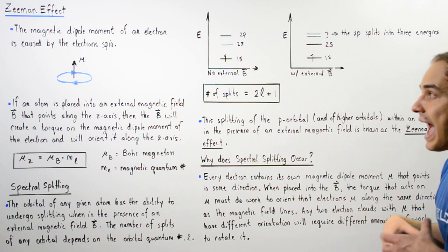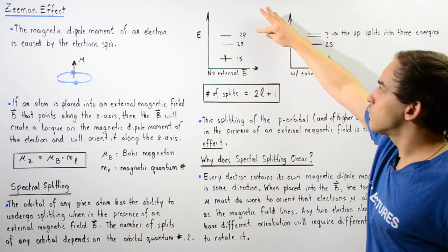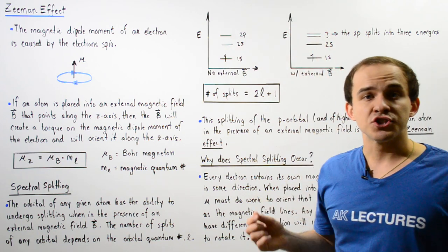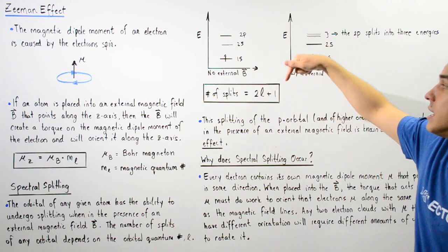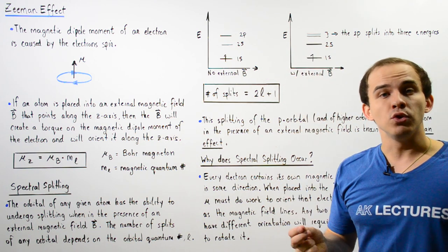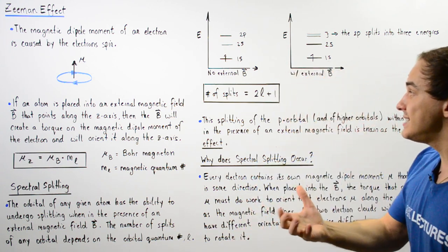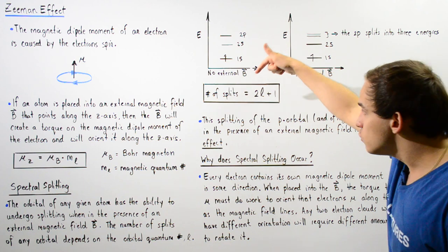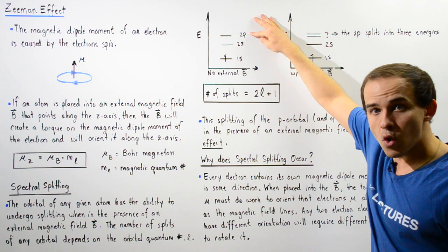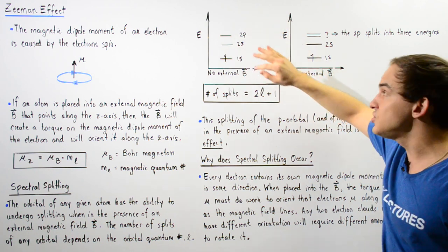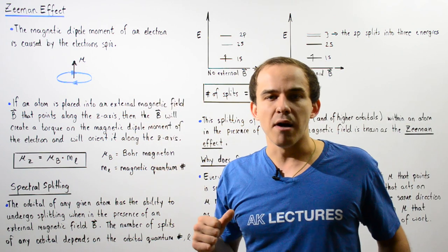How many splits actually take place depends on the equation 2L+1. For the p orbital, where the orbital quantum number L equals 1, we get 2 × 1 + 1 = 3. For the d orbital, where L equals 2, we get 2 × 2 + 1 = 5, so the d orbital would split into five different energy levels. This is once again known as the Zeeman effect.